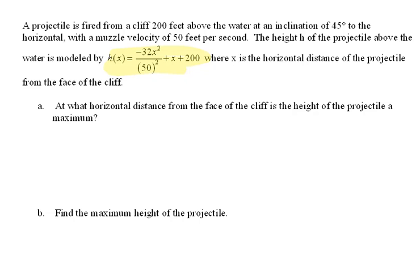Where x is the horizontal distance of the projectile from the face of the cliff. If we get an idea of what's going on here, we have a cliff here, and then there's water underneath it. This projectile is being fired off the top of this cliff at a 45 degree angle.